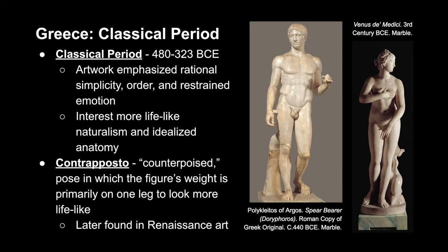Next we move into the Classical period of Greece, which was from 480 to 323 BCE. During this period, the artwork emphasized rational simplicity, order, and restrained emotion. We can see in the difference between these sculptures that there's more of an interest in lifelike naturalism and idealized anatomy.